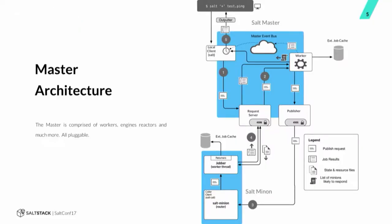We've got the beginning of an architecture slide of the master. We have a number of these architecture images floating around — this shows the master and the minion. I want to take you through what happens on a few basic operations on a Salt master. Say that you are running a salt command — salt star test.ping, or test.fib, which is the Fibonacci sequence.